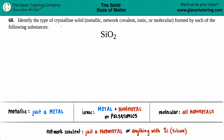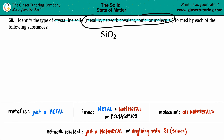Number 68: identify the type of crystalline solid — whether it's metallic, network covalent, ionic, or molecular — formed by SiO₂. There are four different types of crystalline solids: metallic, network covalent, ionic, and molecular. I wrote down a couple of helpful hints to help us figure out which one SiO₂ forms.